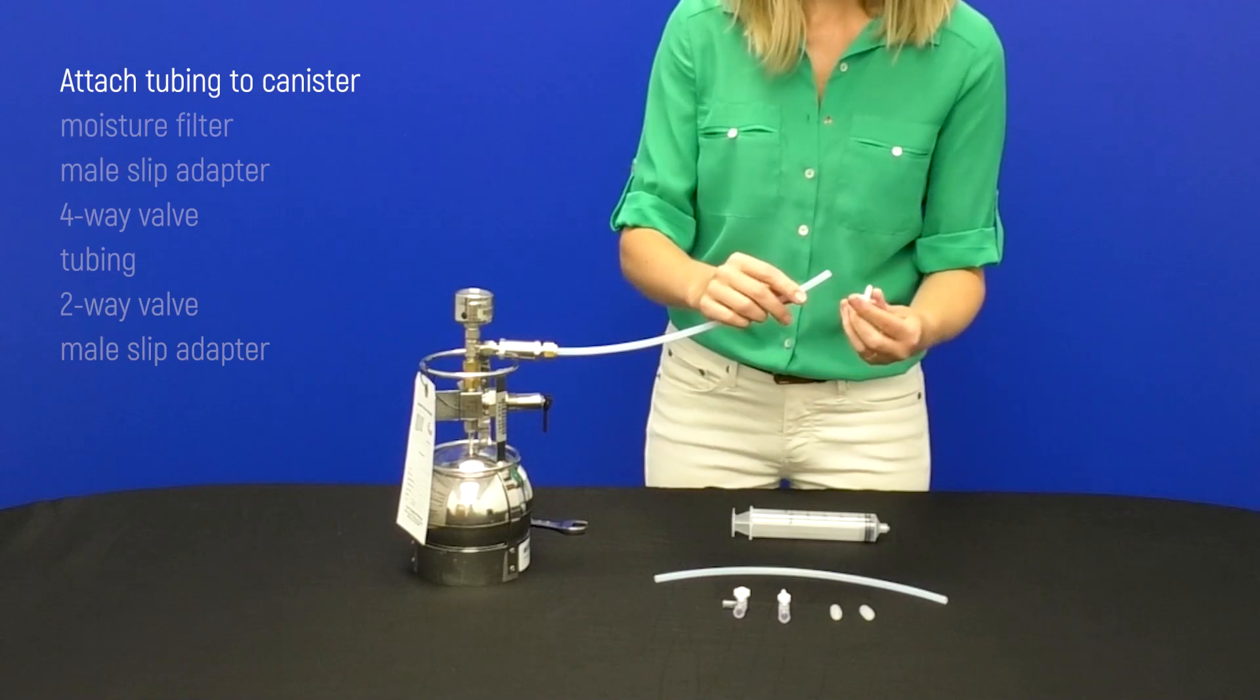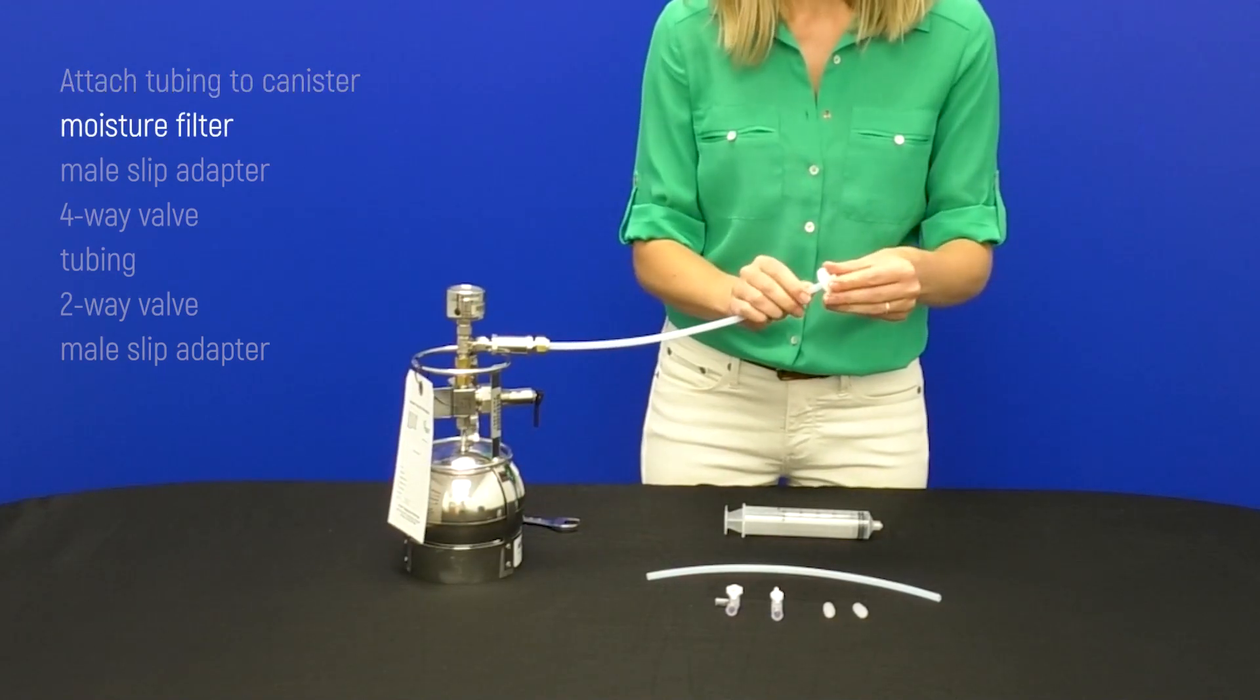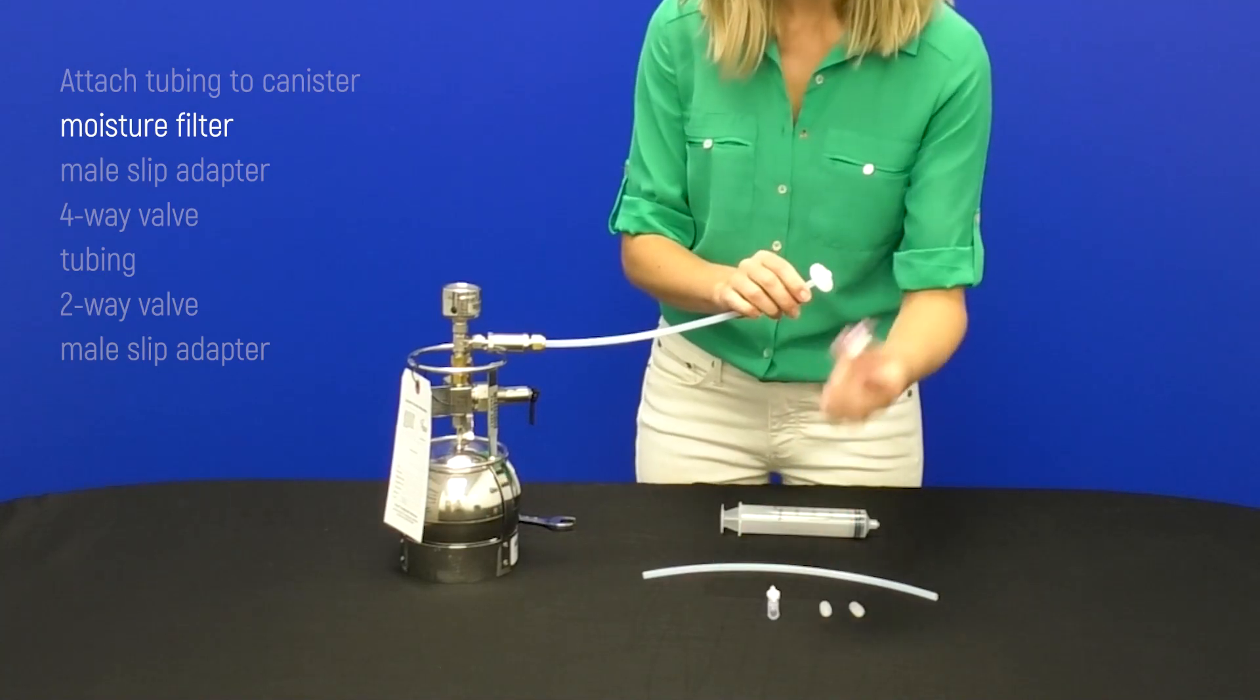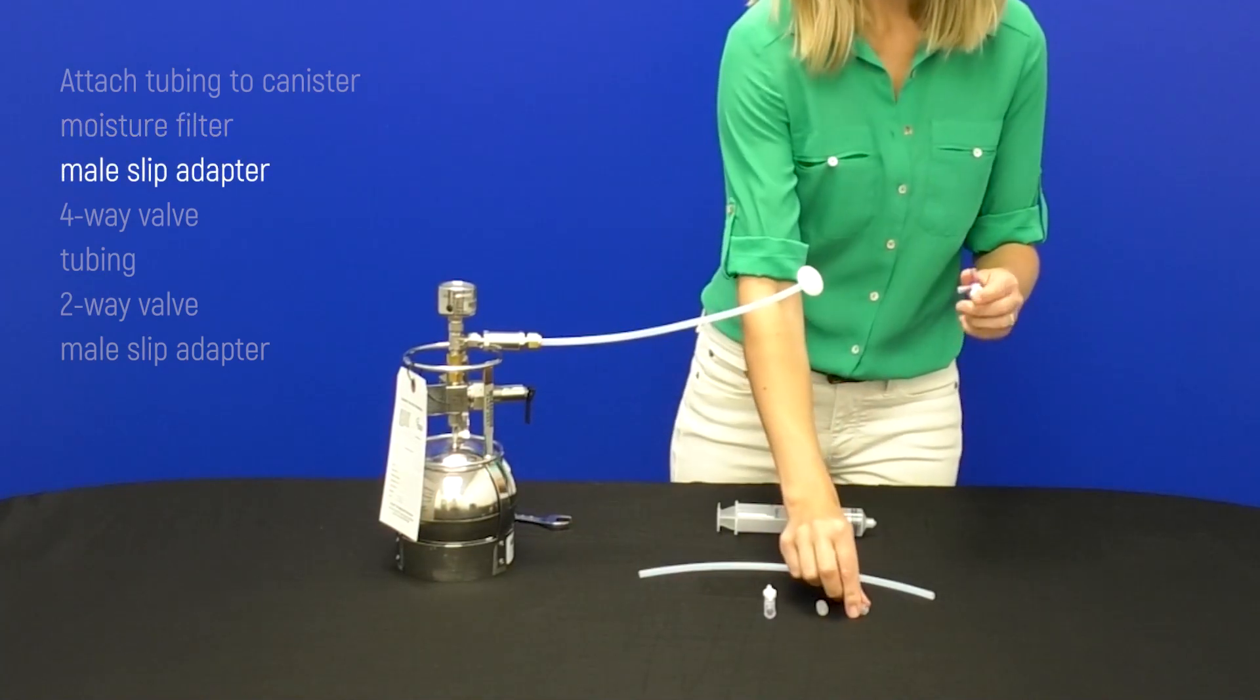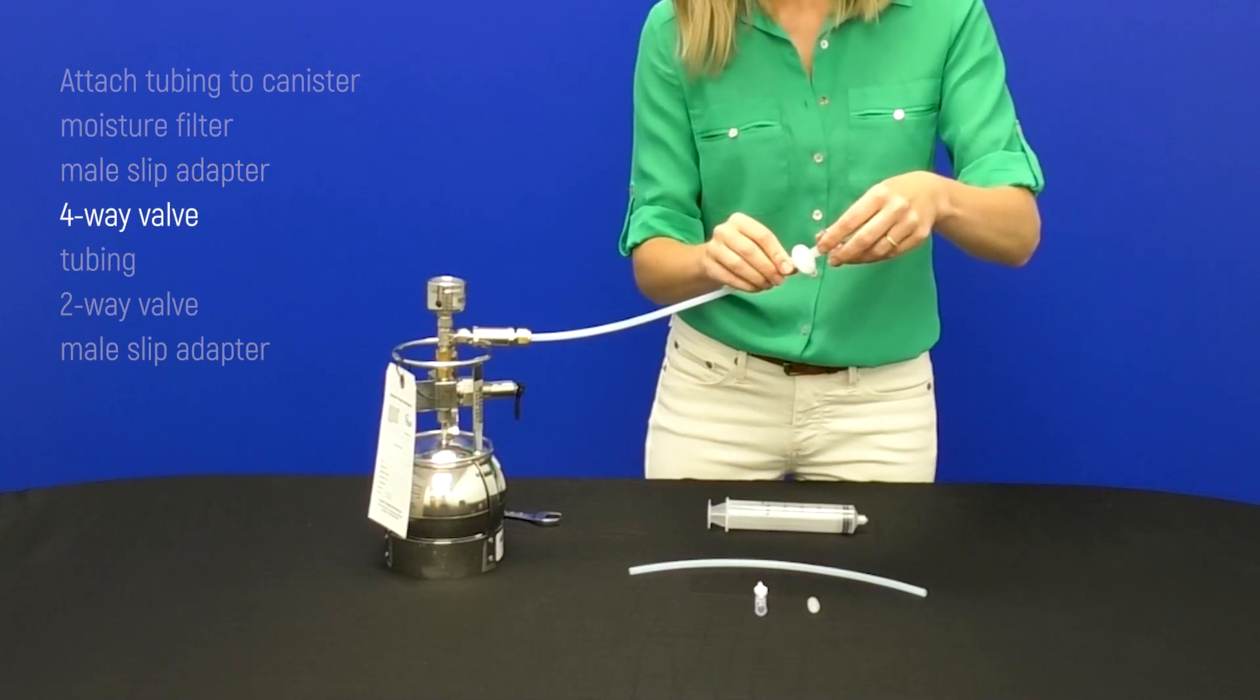Then from here, you will attach your moisture filter and then this will connect to the side of the four-way valve. So use one of the male slip adapters to connect that and the moisture filter.